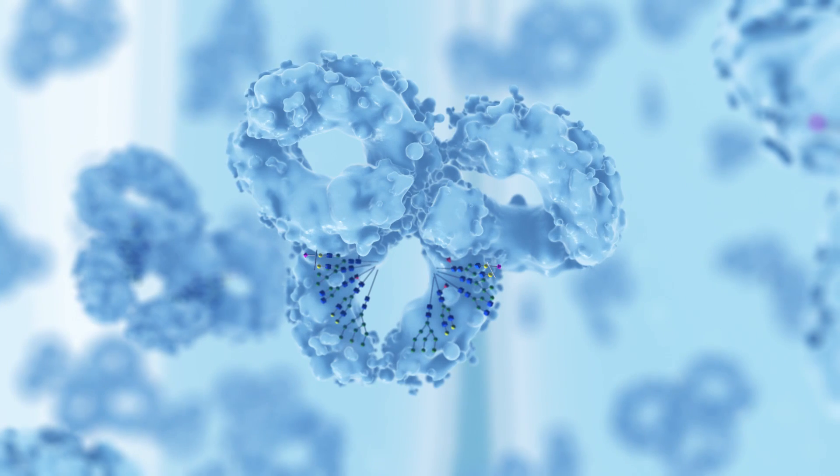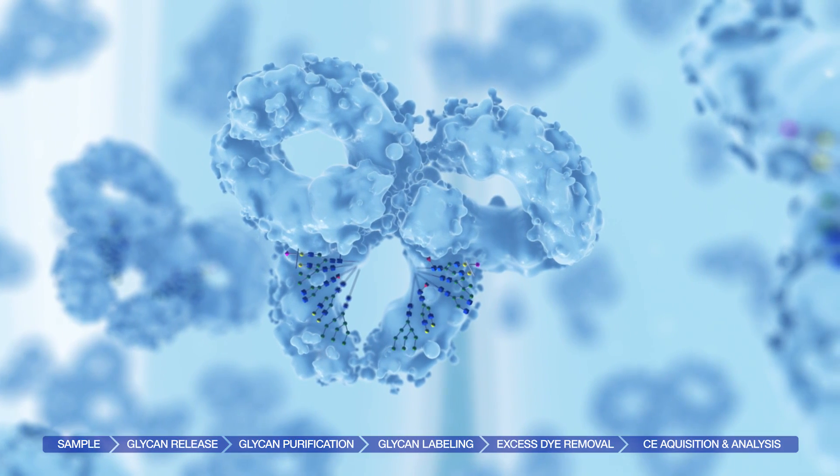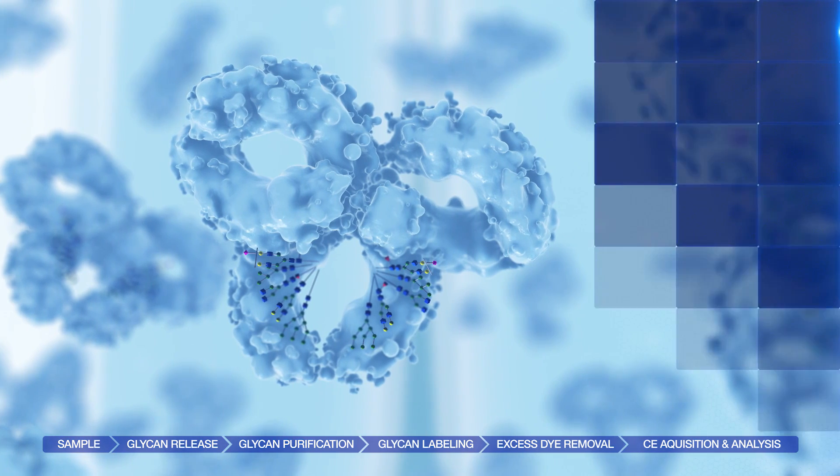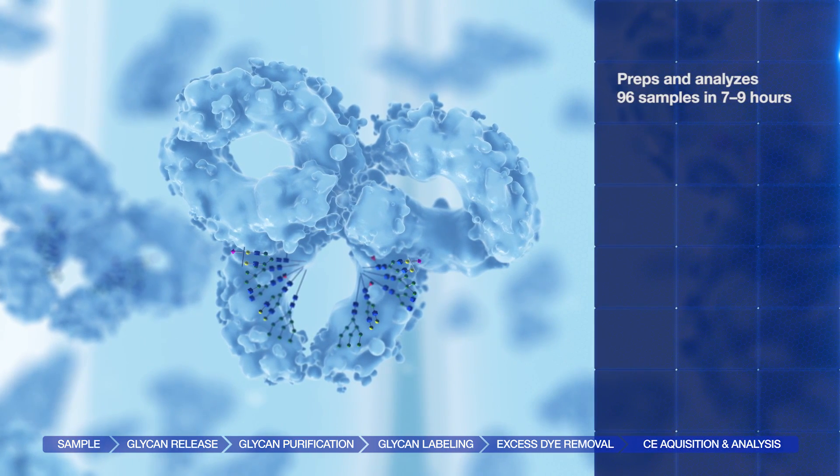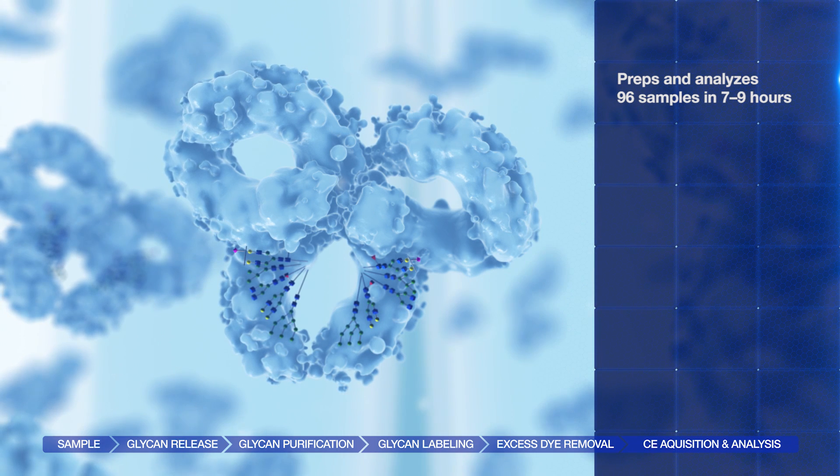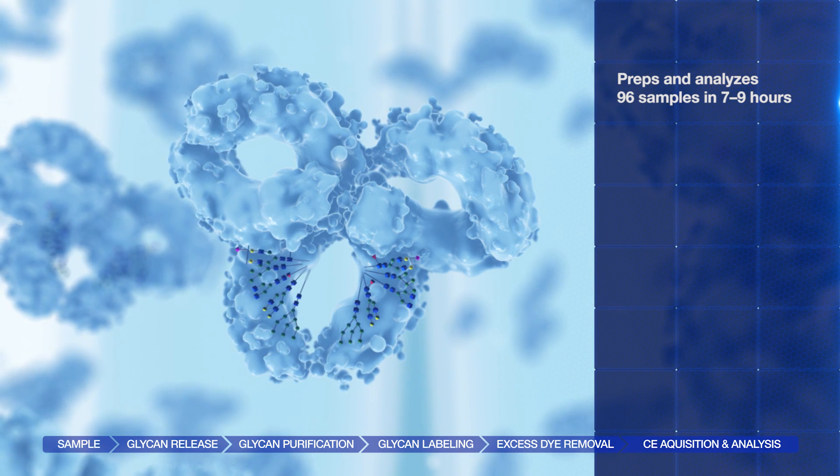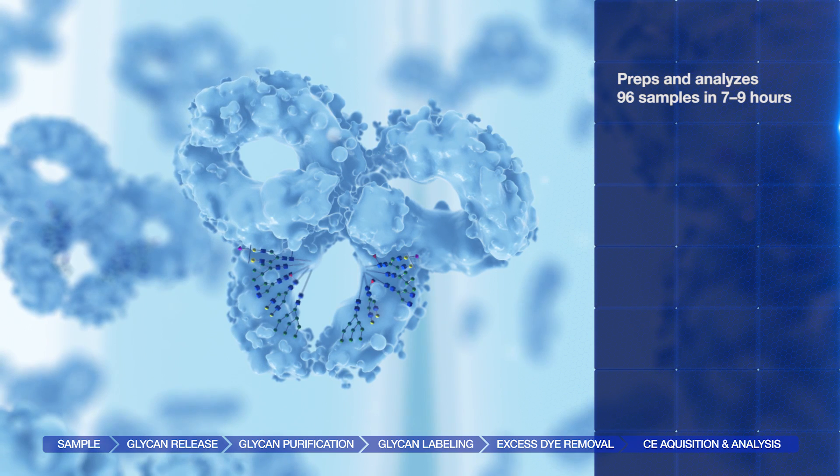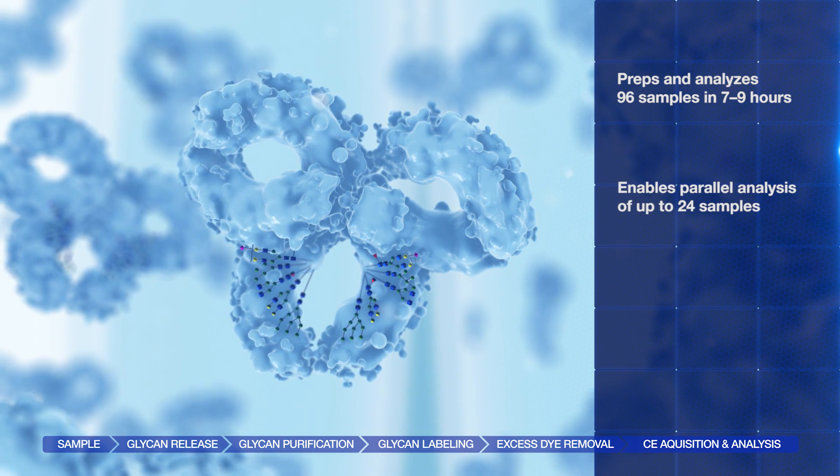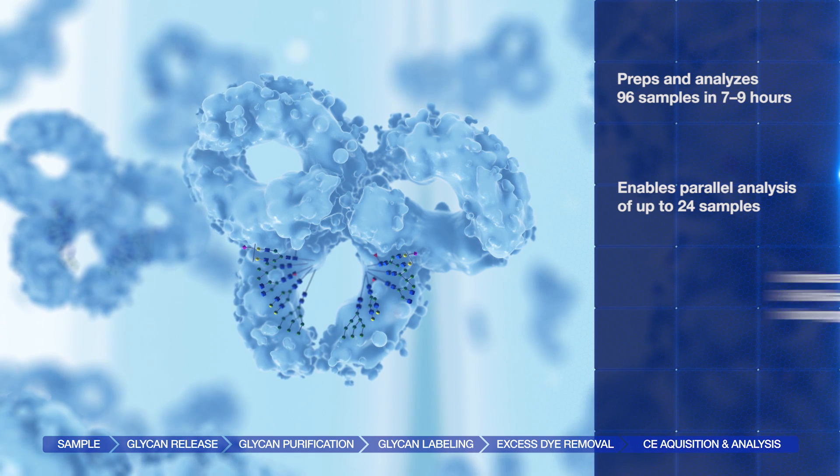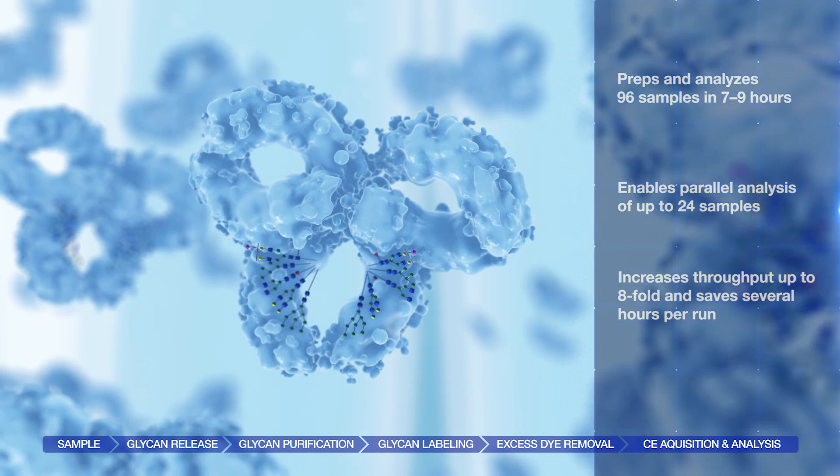The system is based on a workflow that prepares and analyzes 96 samples in 7 to 9 hours. In contrast to traditional glycan analysis methods, the Glycan Assure system enables parallel analysis of up to 24 samples, increasing throughput up to 8-fold and saving several hours per run.